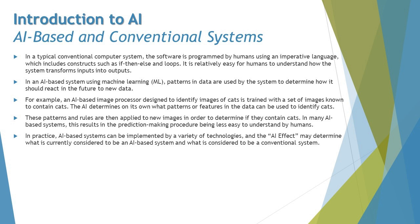These patterns and rules are then applied to new images to determine if they contain cats. In many AI-based systems, this results in the prediction-making procedure being less easy for humans to understand. The system detects and classifies images into particular categories in ways that would not be possible for humans to do through conventional prediction. Images can be processed by training the system through different patterns of data.